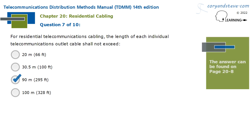For residential telecommunications cabling, the length of each individual telecommunications outlet cable shall not exceed 90 meters, or 295 feet.